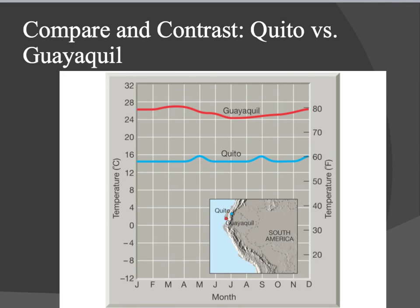Here are two places in South America. Quito is situated right on top of this topography — on a mountain — and Guayaquil is situated on the coastline. Both are pretty close to water, so their temperatures don't really have a big temperature range, except that Guayaquil is much warmer. Why? Because Quito is situated right on top of this mountain, and as elevation increases, temperature decreases.